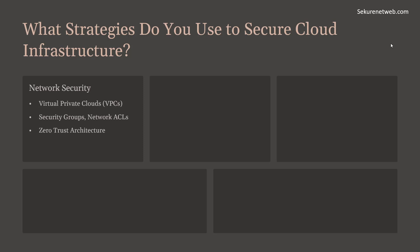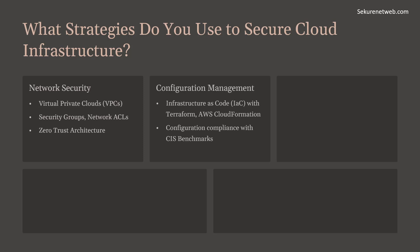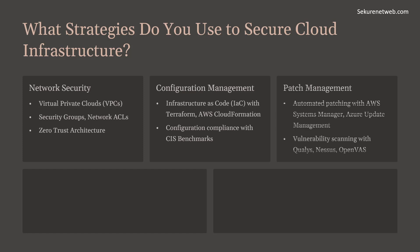For configuration management, use Infrastructure as Code with tools like Terraform, AWS CloudFormation, or Azure Resource Manager to automate and standardize infrastructure deployments. For configuration compliance, ensure configurations comply with best practices and frameworks like CIS Benchmarks using tools like Chef InSpec or AWS Config Rules. Implement automated patching with solutions like AWS Systems Manager Patch Manager.